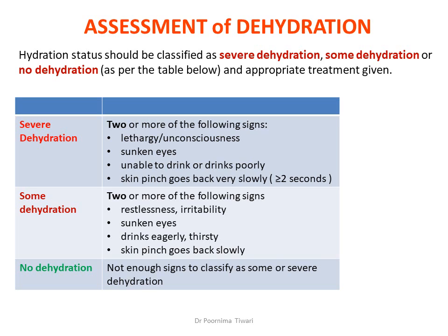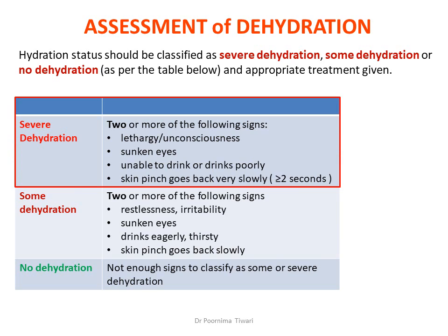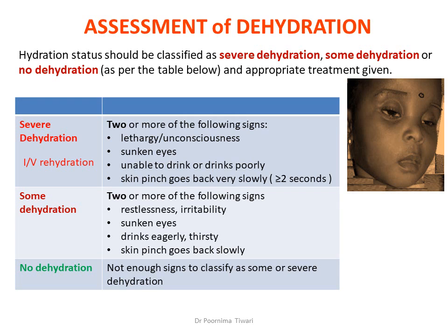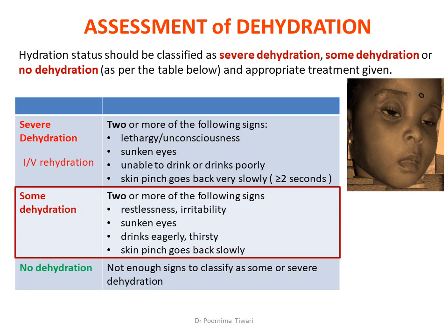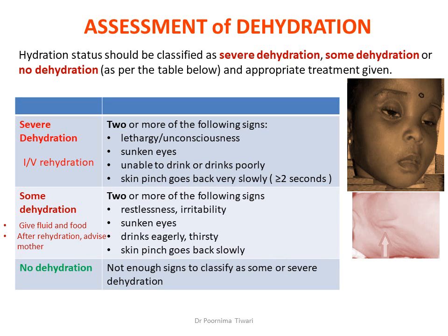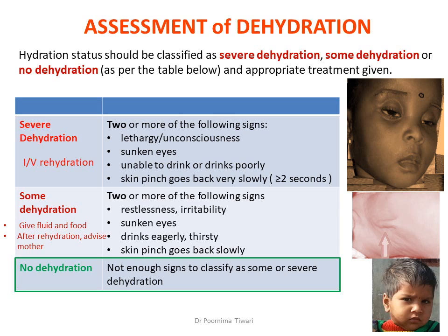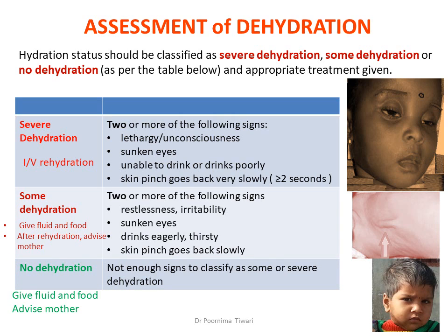Classify as severe dehydration if two or more of the listed signs are present; IV rehydration is then advocated. For some dehydration, if two or more signs from the second category are present, give fluids orally in the form of oral rehydration salt, continue feeding, and after rehydration advise the mother to maintain hydration at home. If there is no dehydration, give fluids and ORS to prevent future dehydration, and advise the mother on danger signs that require immediate reporting to a doctor.